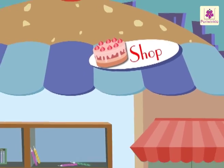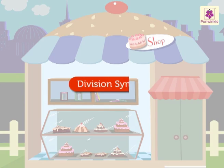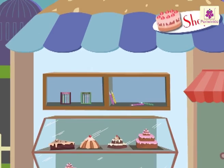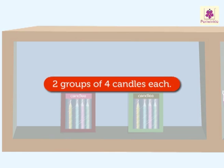Welcome to the Cake Shop. Today, let's learn about the division symbol in this beautiful cake shop. Can you see these eight colorful candles? They are divided equally into two groups. Now, we have two groups of four candles each.